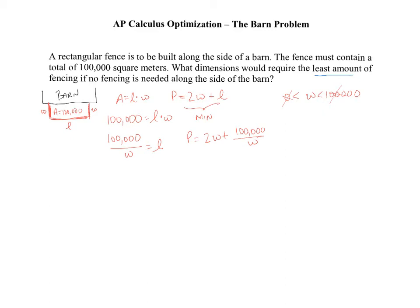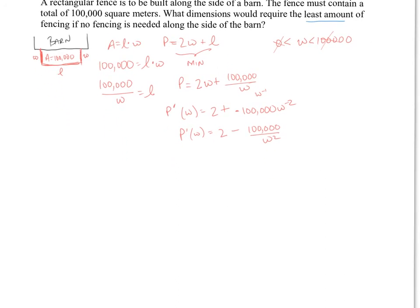All right. So over here, let's go ahead and take the derivative of this. So p prime is going to be 2 plus, now this is going to be, remember, w to negative 1. So I'll have negative 100,000 w to the negative 2. Let's clean this up and write this as 2 minus 100,000 over w squared.